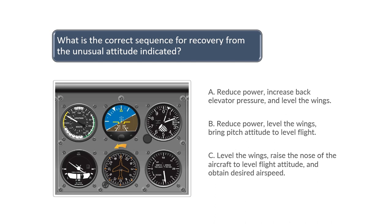...the first step to correct from this unusual flight attitude would be to reduce power. The pilot would then need to level the wings and raise the nose to bring the aircraft back to a level attitude. The correct answer to Question 9 is B.